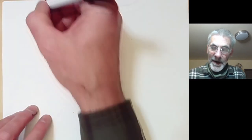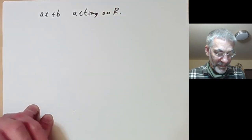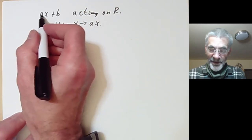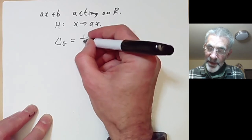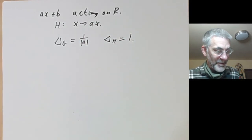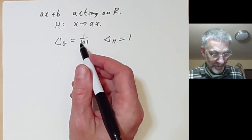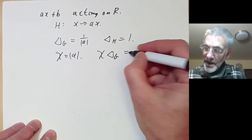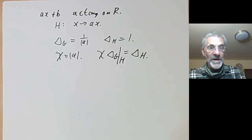Finally, let's look at the ax+b group acting on ℝ. Here H is the set of elements taking x to ax, so H is just the positive reals. We saw earlier that δ_G = 1/a and δ_H = 1 because H is abelian. So we take χ = |a|, and we see that χ times the modular function of G restricted to H is indeed equal to the modular function of H. That'll be all about invariant measures on groups for the moment.